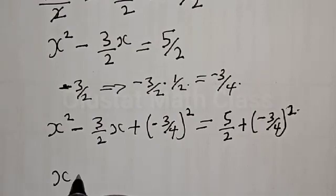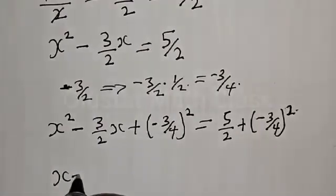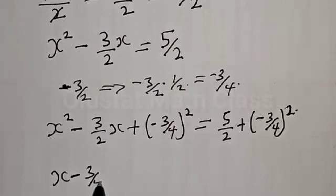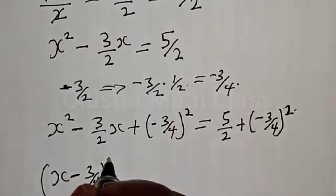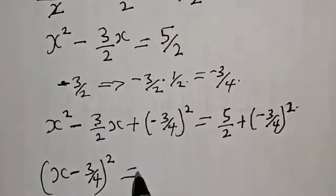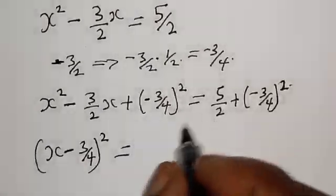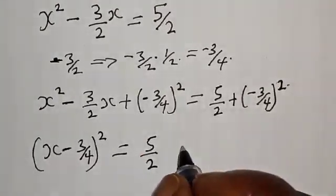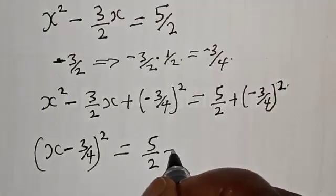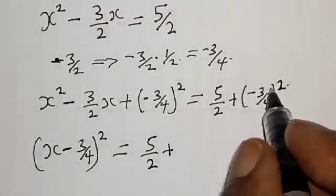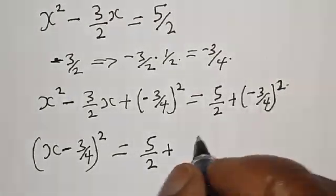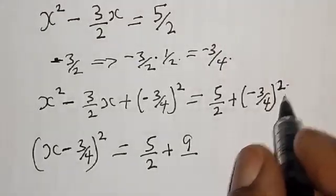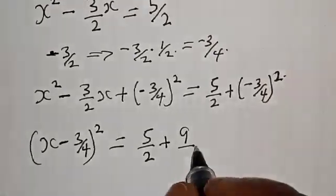We pick the left side and write it as a perfect square: (s - 3/4)² = 5/2 + (-3/4)². Now (-3)² = 9, so the right side becomes 5/2 + 9/16.